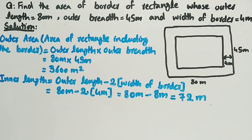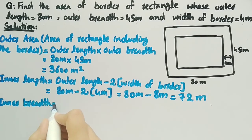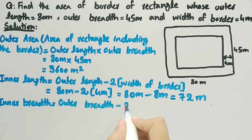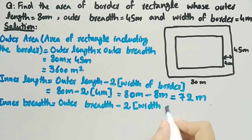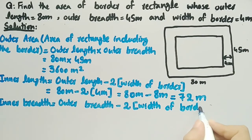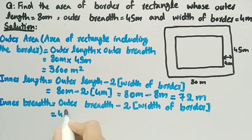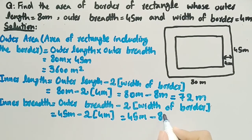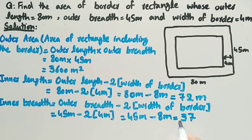Now we will find the inner breadth. Inner breadth is equal to outer breadth minus two times the width of border. Outer breadth is 45 meters minus two times 4 meters, which is 8 meters. 45 minus 8 is equal to 37, so inner breadth is equal to 37 meters.